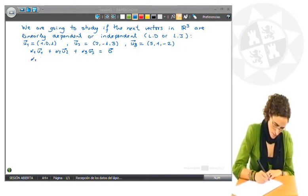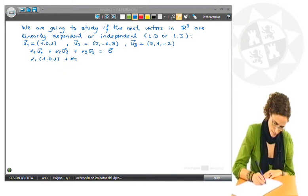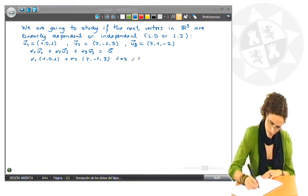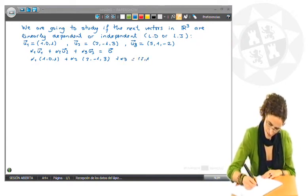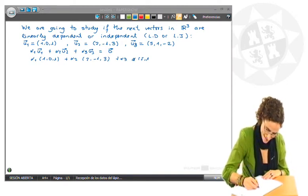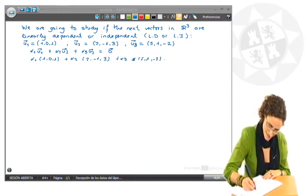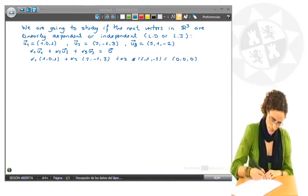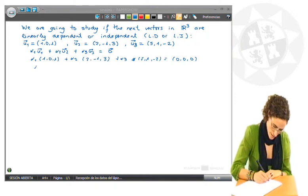So I write now the coordinates of the vectors and make this equal the null vector in R³. Now I do the computations: